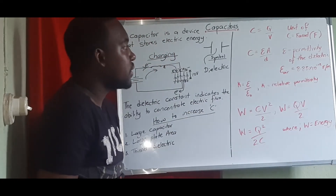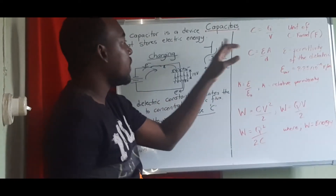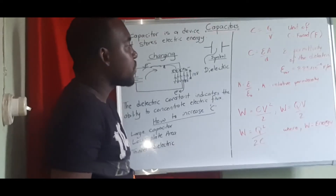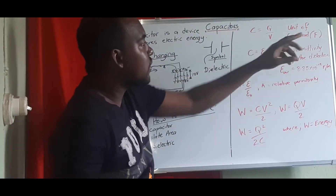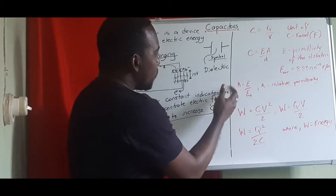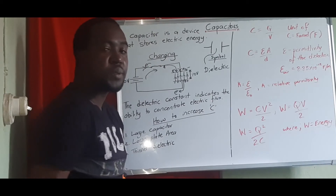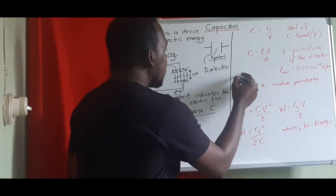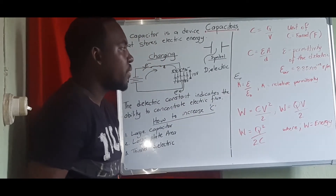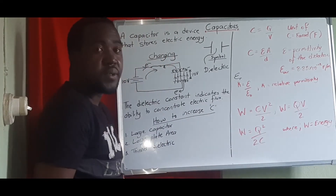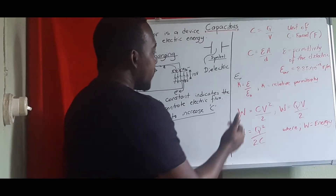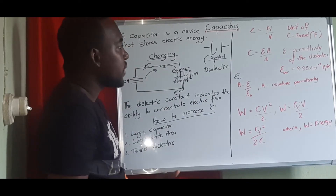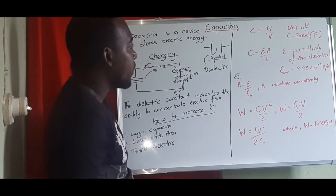Epsilon represents the permittivity of the dielectric. The permittivity of free air is 8.85 times 10 to the negative 12 farads per meter, and the farad is the unit of capacitance. You may also come across relative permittivity, given as k or epsilon-r. If given relative permittivity in a question, multiply it by the permittivity of air before using it in the equation.